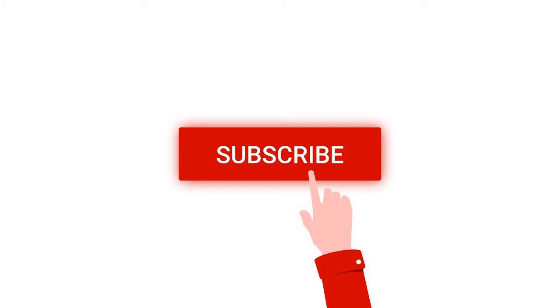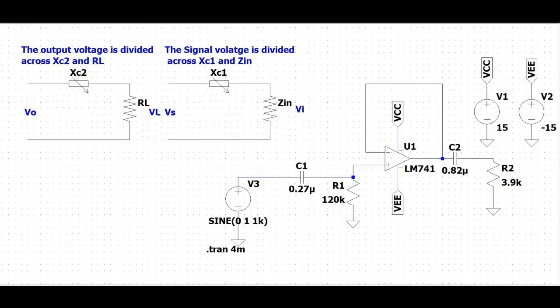In a capacitor coupled voltage follower circuit, where both input and output are capacitor coupled, the non-inverting input terminal must be grounded via resistor R1. This resistor is required to bypass current to the amplifying non-inverting input terminal.